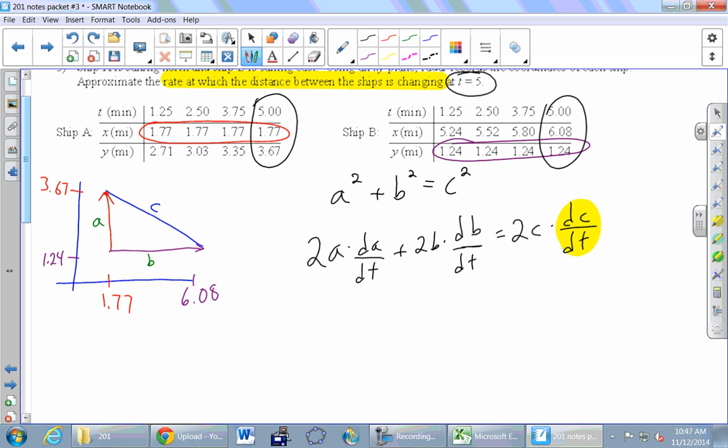So the numbers that are written up here in purple and red are actually the numbers we'll need. So at T equals 5, how do I find out how long A is? You can look at that picture and figure out how long A is. Yeah, isn't it? Right?